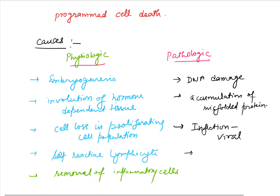Lastly, duct obstructions — like in the case of the pancreas and parotid gland — lead to pathologic atrophy in the parenchyma. Those are the causes of apoptosis. Moving on to the mechanism.